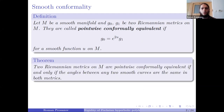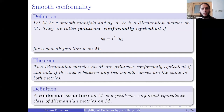A very basic result from smooth geometry says that two Riemannian metrics are pointwise conformally equivalent if and only if all the angles between any two smooth curves are the same in both metrics. The notion of being pointwise conformally equivalent is an equivalence relation, so we can consider equivalence classes — those are called conformal structures on our manifold. A conformal structure is when we can measure angles but cannot really measure lengths.